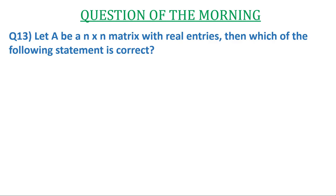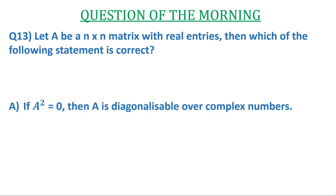The question is: Let A be an n×n matrix with real entries. Then which of the following statement is correct? Option A: If A² = 0, then A is diagonalizable over complex numbers.